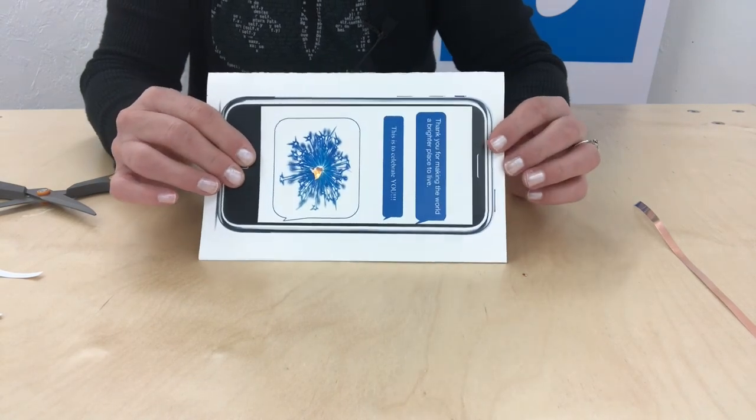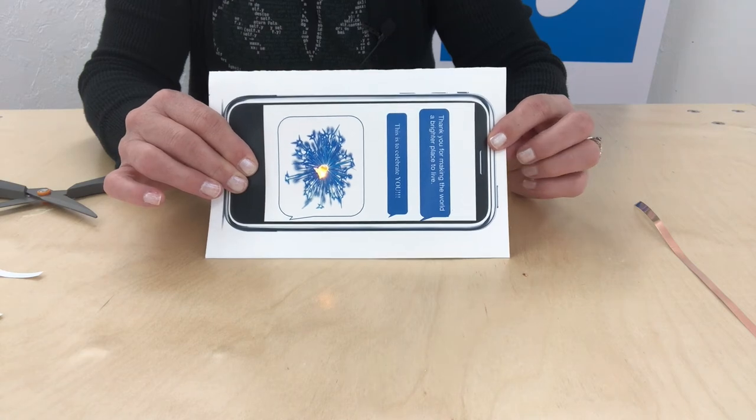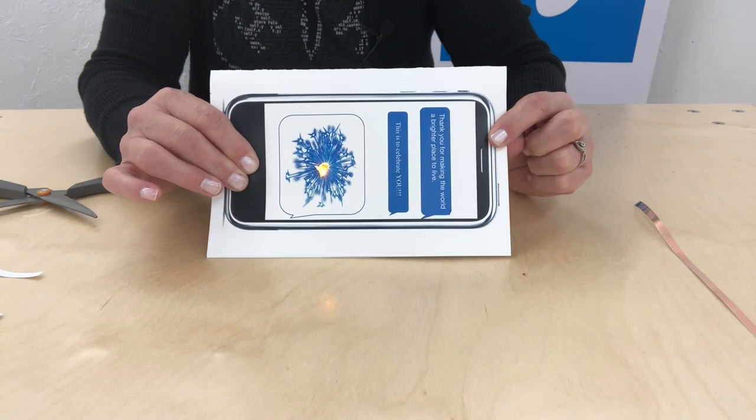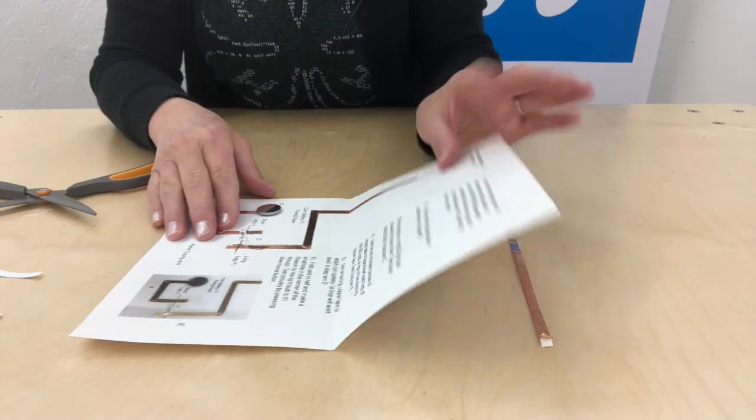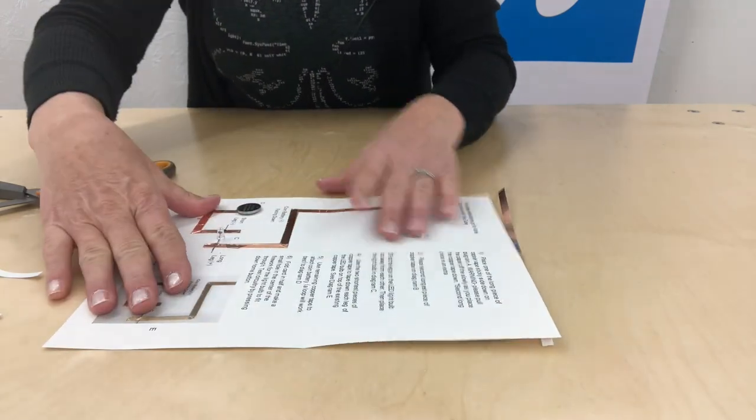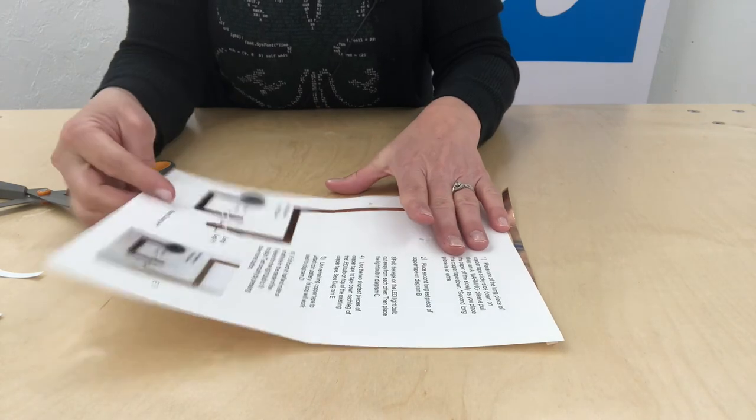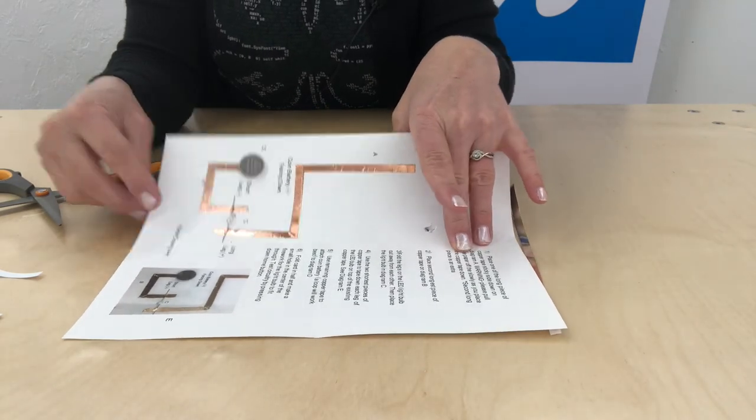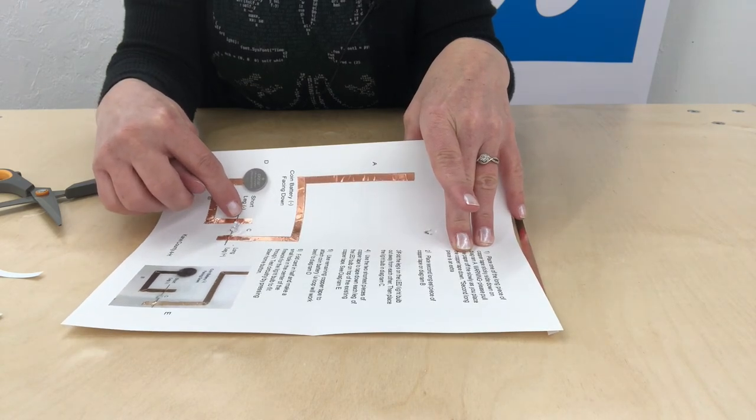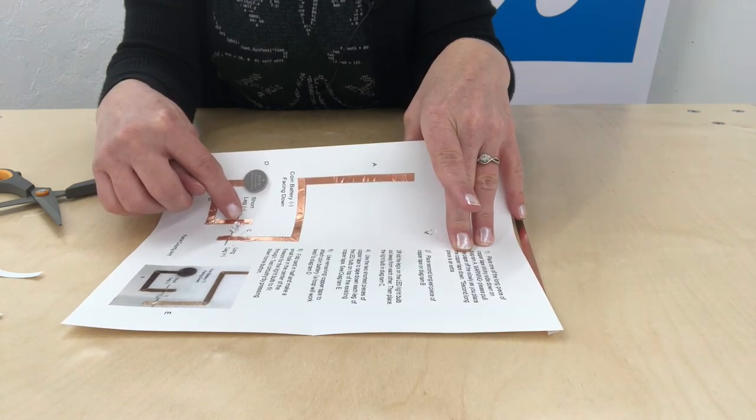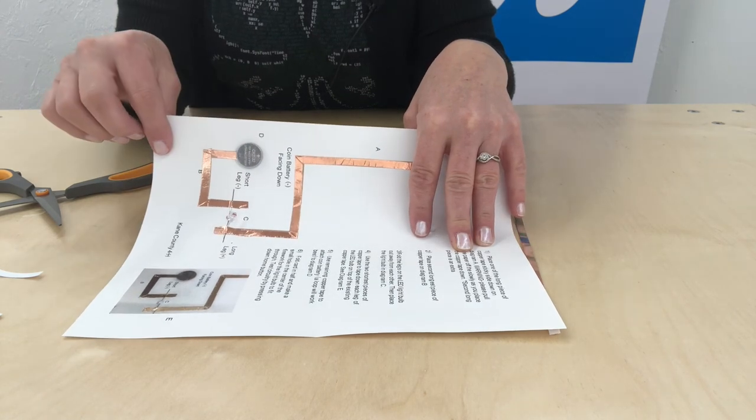If your card did not work, mine wasn't working for a minute, and that's okay. If yours didn't work, this is a chance for you to problem solve. We gave you an extra piece of copper tape in your packet. So look at your card. Check all of your copper tape. Make sure there's no breaks in it. Check your bulb to make sure that the negative side, the short side, is on the left, the positive side is on the right, and then make sure your battery is placed in the right position.